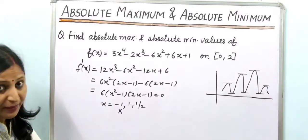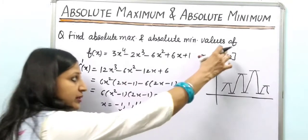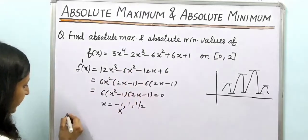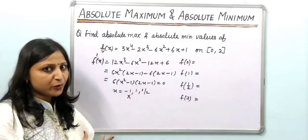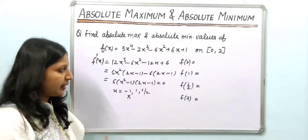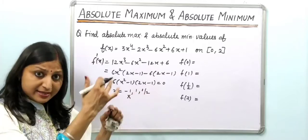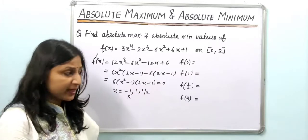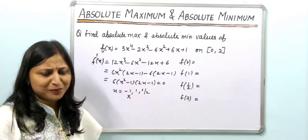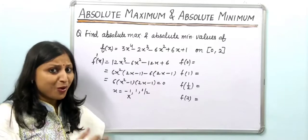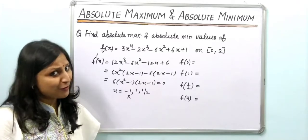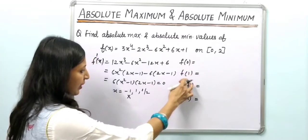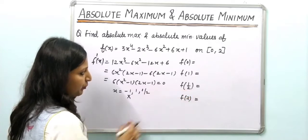As discussed, since we are working on a closed interval, we evaluate the function at the critical points as well as the endpoints. So the points to evaluate are x = 0, x = 1/2, x = 1, and x = 2.